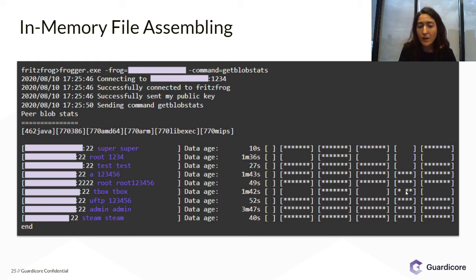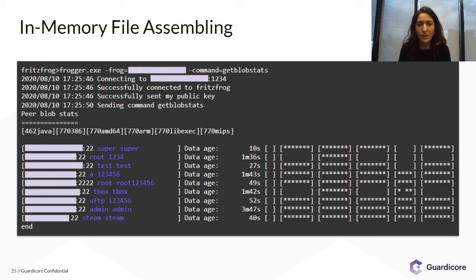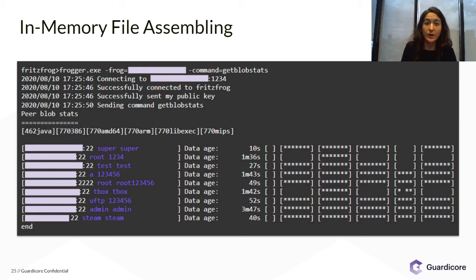In the column that corresponds to the cryptominer, it has only three out of four blobs, so it cannot really run the miner. If it wishes to run the cryptominer, it needs to first ask its peers for the missing blob, then assemble all the blobs using the assemble module and run it locally.